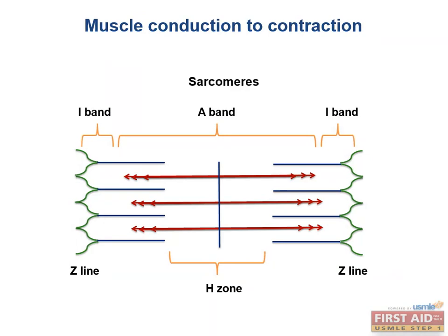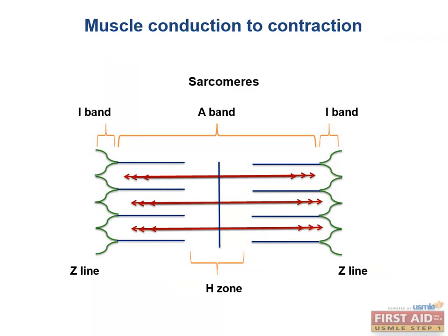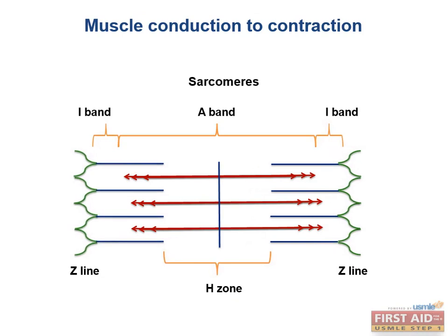Take a look at this contraction. The I band and the H zone will get smaller with contraction, as the area of overlap between the actin and myosin increases. In relaxation, the I band and the H zone elongate. In summary, the H zone contains myosin only, the I band contains actin only, and the A band contains myosin and the myosin-actin overlap region. The Z line is the site of actin attachment, and the M line is the site of myosin attachment. To remember the distinction, you can use the memory aid: HIS shrinkage. And the A band is always the same.